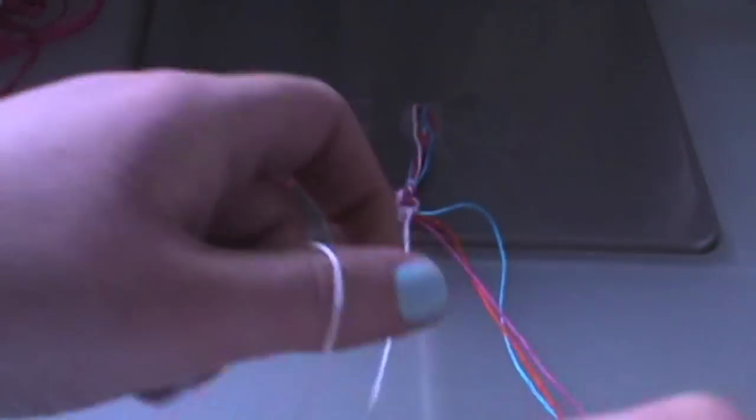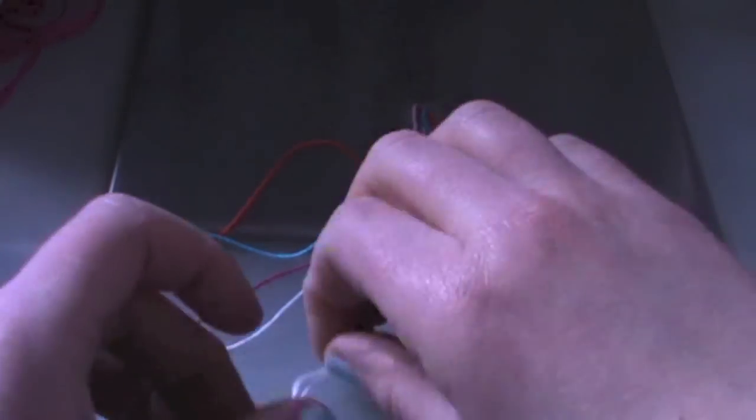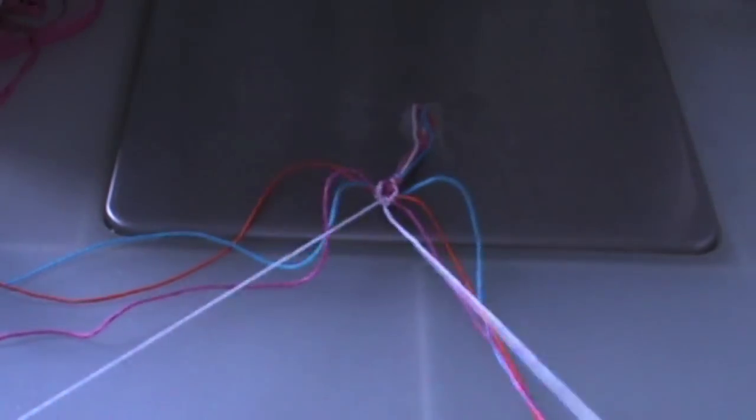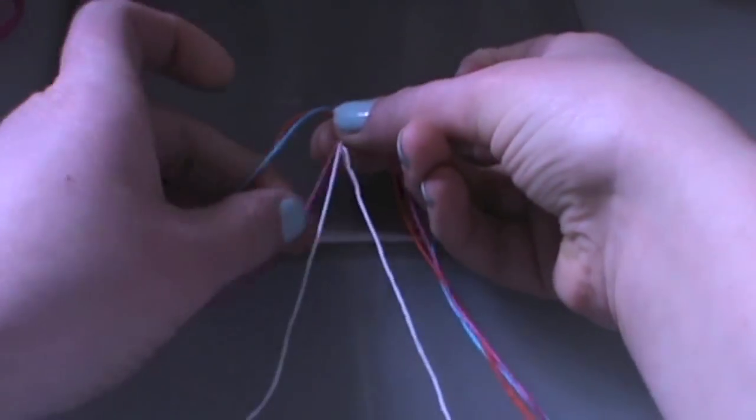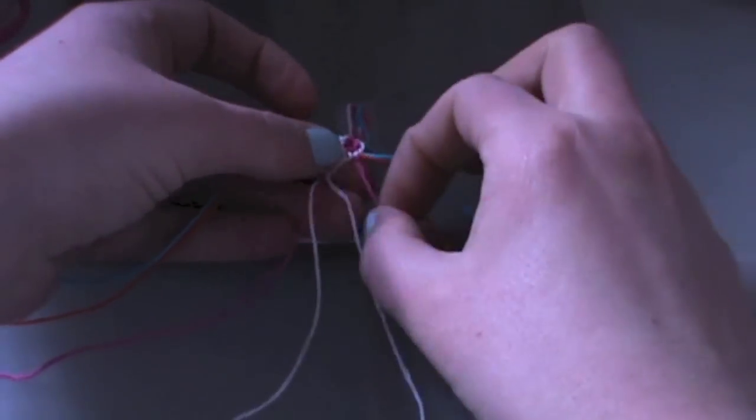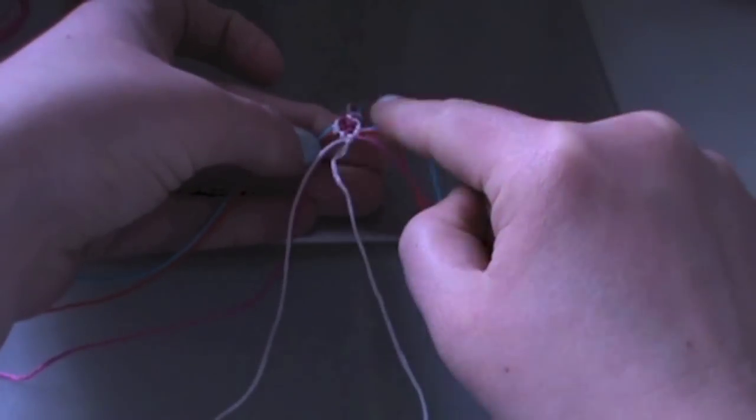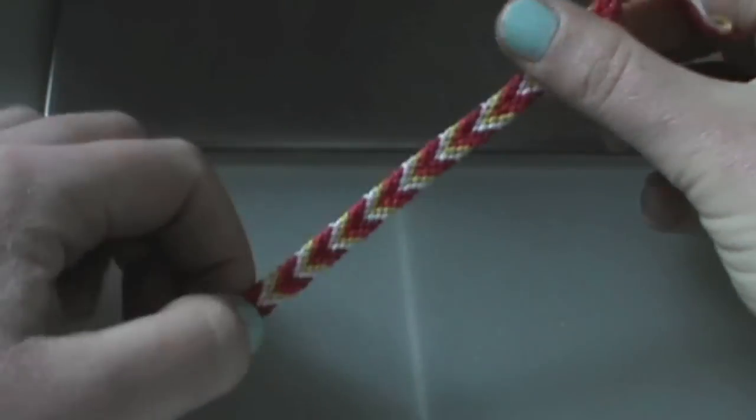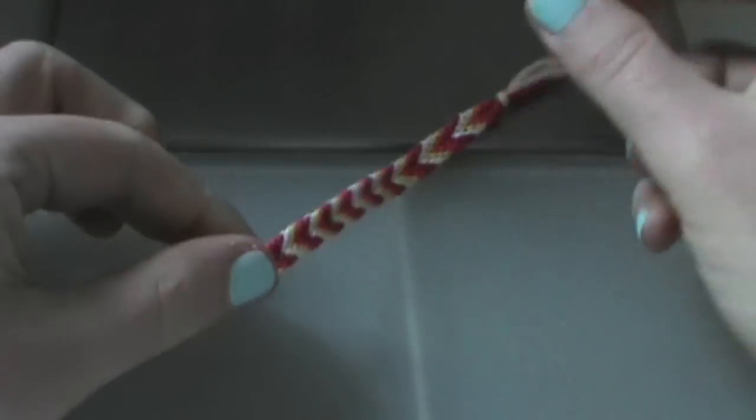And then when you've done that, you leave those and then you go back to the outside and take the outermost color. And when you're done you have your friendship bracelet—this is a different one.